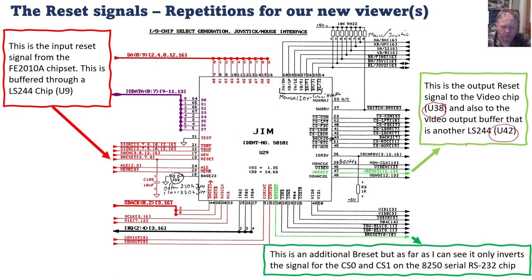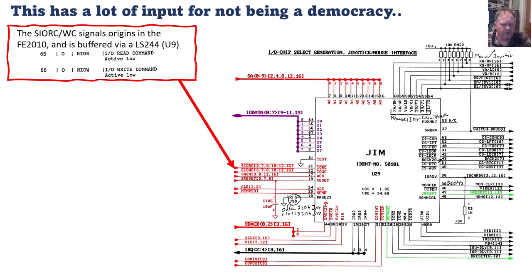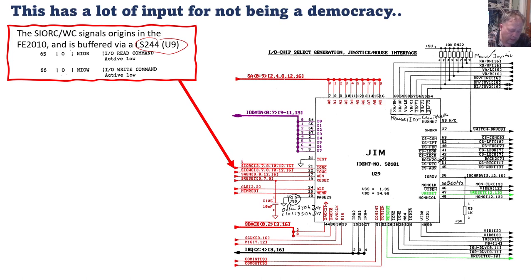The output reset signal to the video chip — the V reset — was covered last time. It connects to U38, the video chip, and U42 which controls the output to the CGA connector on the back of the computer. There are many other inputs to this GYM chip. We can see an S in front of the IO read or IO write command signals — every time a signal connects through an LS244 gate or is buffered, it's called S. The AEN signal and these are common signals on all IBM-compatible computers.